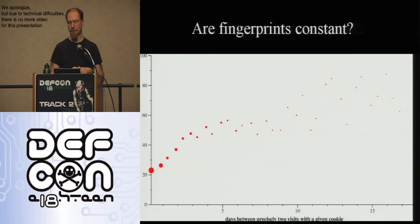Another important question is: don't these fingerprints change over time? Are they a stable way to track someone if they upgrade their browser or install a new font? We checked this by looking at people who visited Panopticlick exactly twice with at least an hour between visits — excluding people who might be playing with the site. As a function of time between visits, we measured the probability that their fingerprint had changed. As more time passes, the likelihood of a changed fingerprint goes up.